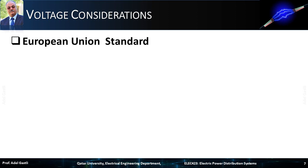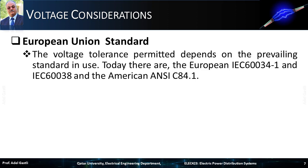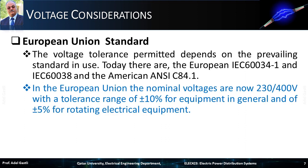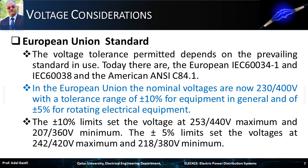For instance, according to the European Union standard about the low voltage at the distribution level, the voltage tolerance permitted depends on the prevailing standard in use. Today there are the European IEC 60034-1 and IEC 60038, and the American ANSI C84.1. In the European Union, the nominal voltages are now 230-400 volts, with a tolerance range of ±10% for equipment in general, and ±5% for rotating electrical equipment. The ±10% limits set the voltage at 253-440 volts maximum and 207-360 volts minimum. The ±5% limits set the voltages at 242-420 volts maximum and 218-380 volts minimum.